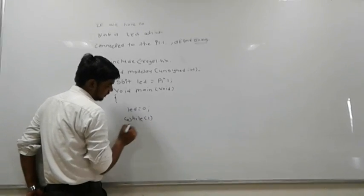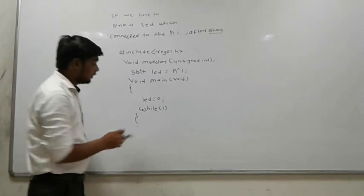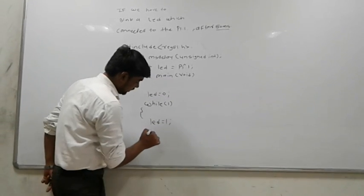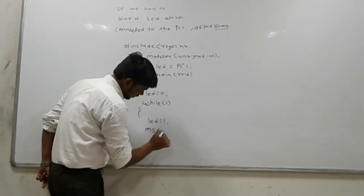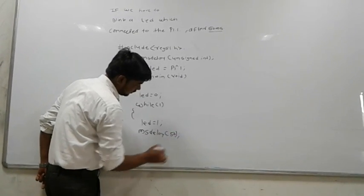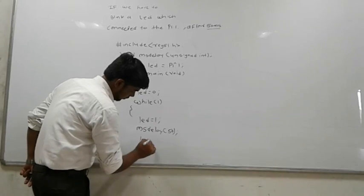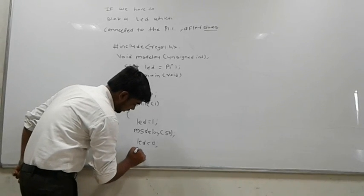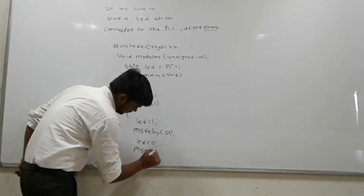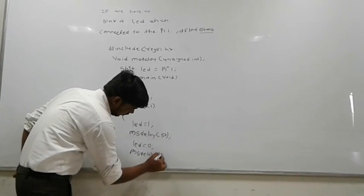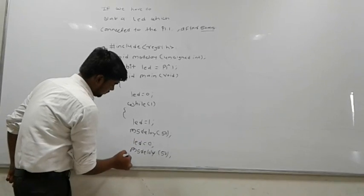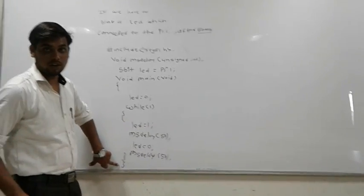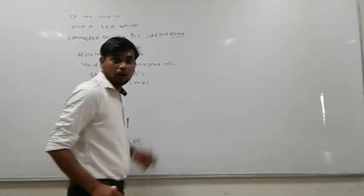Then while 1 is for the continuation in our program. Write operation here LED equal to 1, that is LED is on. After then introduce the delay, that is ms delay of 50 ms. Again off this LED because this is the program of LED blinking. Then again introduce the ms delay of 15 ms. Close this bracket, this is closing of while, this is closing of main.